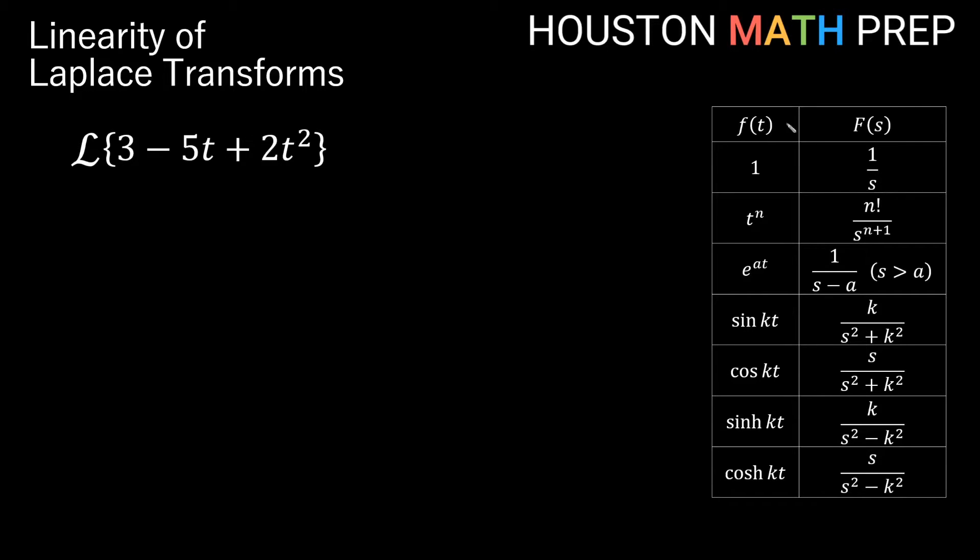Let's go ahead and look at a couple of examples here. I've got a sample Laplace transform chart. We're trying to take the Laplace Transform of 3 minus 5t plus 2t squared. So we can certainly think of this as the Laplace Transform of 3 minus the Laplace Transform of 5t plus the Laplace Transform of 2t squared. And we can also bump these constant multiples out. So we can really think of this as 3 times the Laplace Transform of 1 minus 5 times the Laplace Transform of t plus 2 times the Transform of t squared.